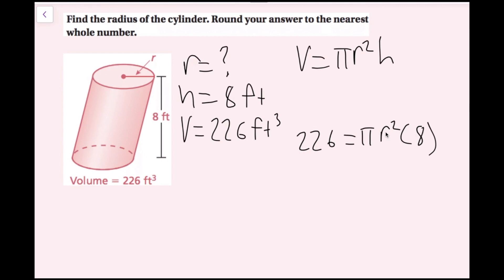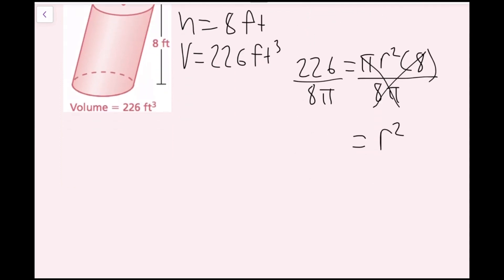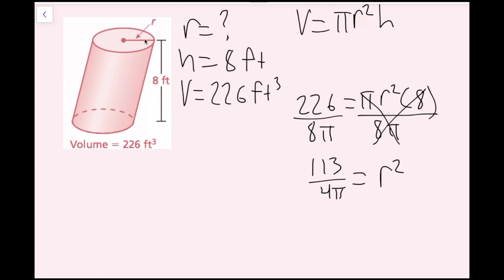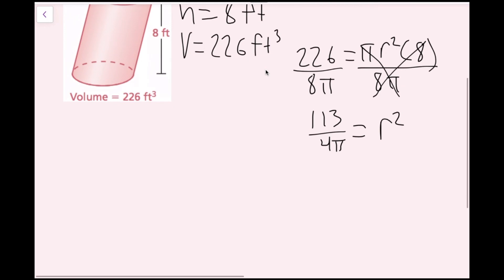Plugging in: 226 equals pi R squared times 8. To solve for R squared, I divide both sides by 8 pi. I can also simplify the fraction — both 226 and 8 are even, so dividing out a 2 gives 113 over 4 pi. So R squared equals 113 over 4 pi. To undo the square, I take the square root of both sides. I only need the positive square root since a radius can't be negative.